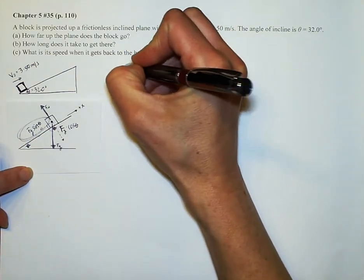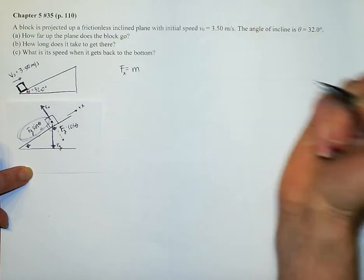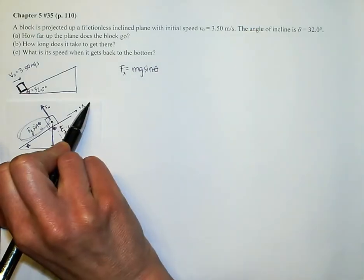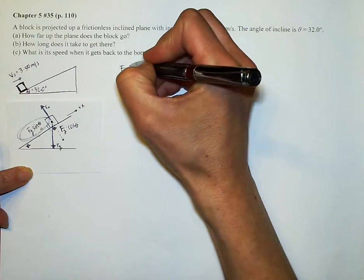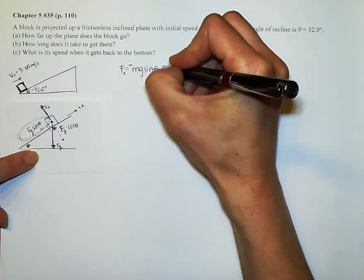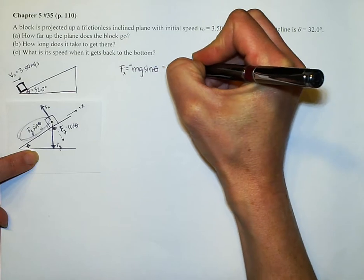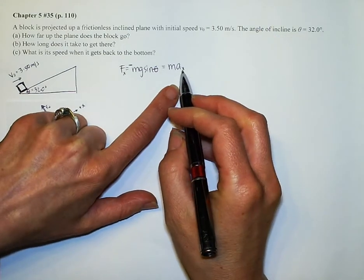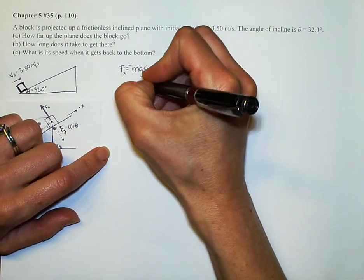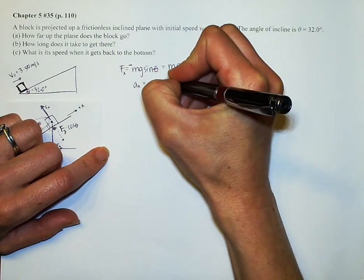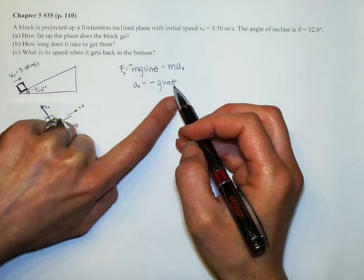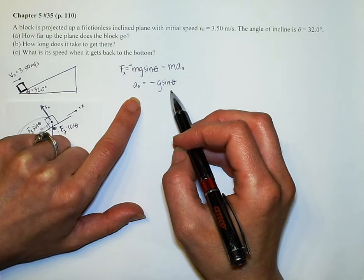Our force in that x direction would be our mg sine theta. I know that my force in the x direction equals mg sine theta. Since I've considered this to be the positive x direction, that would be a negative mg sine theta because this is going in the opposite direction. Force equals mass times acceleration. I can use this to figure out what my acceleration is in the x direction. The masses cancel out, and I find that my acceleration in the x direction is negative g sine theta.